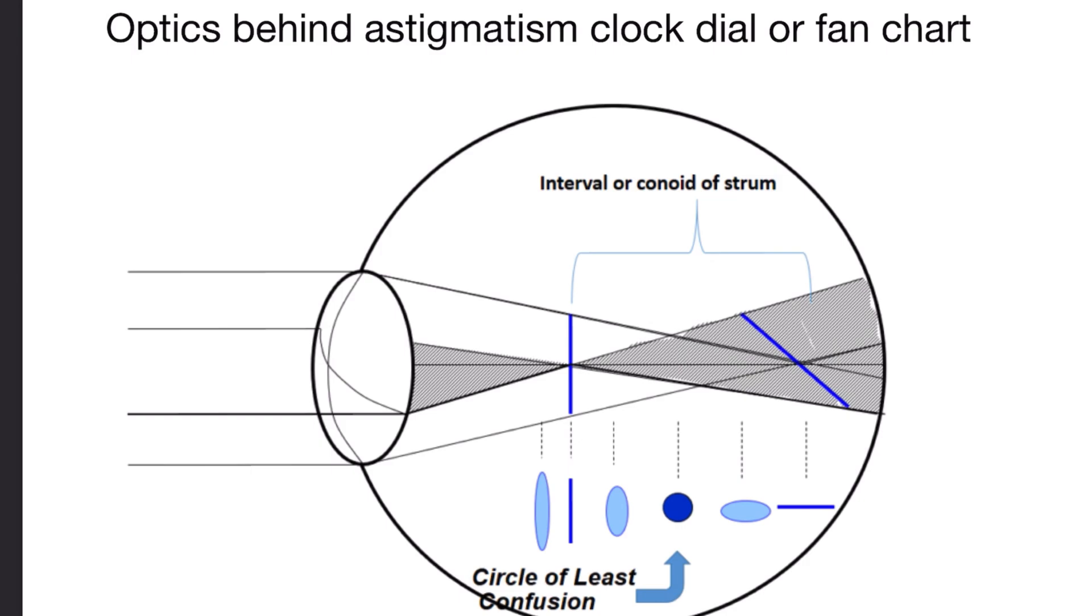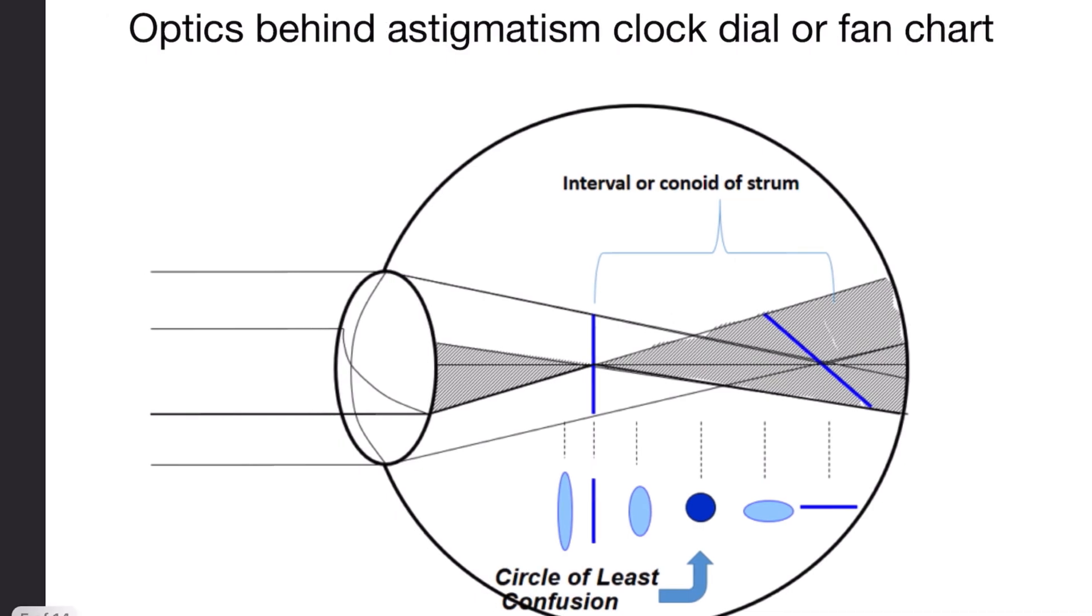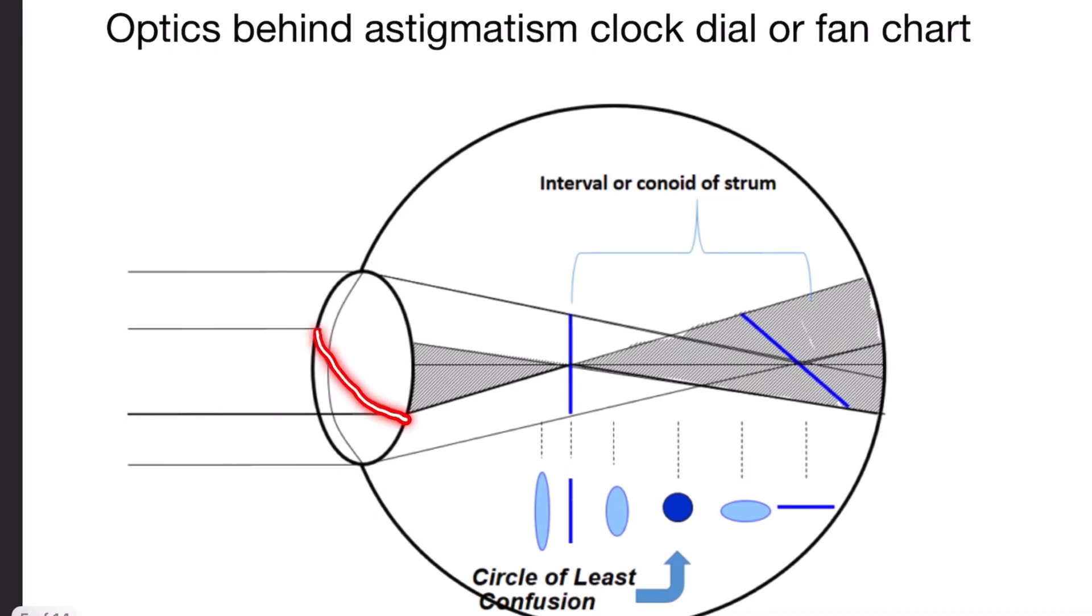What is the optics behind the astigmatic clock dial fan chart? As we are familiar with this diagram, any optical system which does not have similar curvature leads to the formation of two foci rather than forming a single point. The best image by this optical system is formed somewhere here where there is an equal amount of divergence from one meridian and equal amount of convergence from another meridian. The distance between two foci is known as the interval of Sturm.